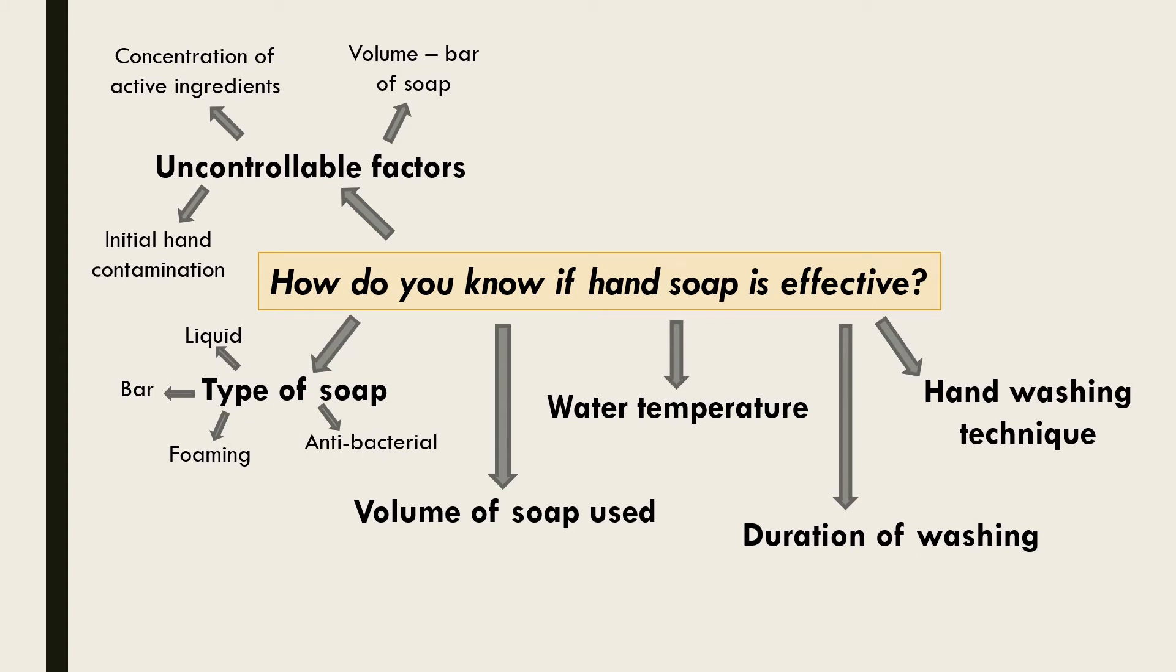This leads to the question of, well, what does effectiveness of hand soap actually mean? How can effectiveness be investigated and measured? One way could be to measure bacterial growth on an agar plate. If hand washing is effective, the presence of microorganisms like bacteria and fungi should be less.